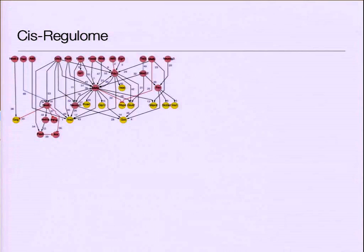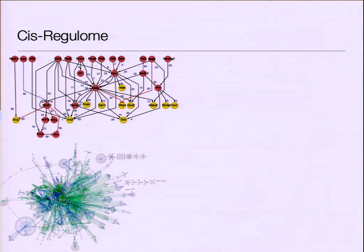The cis-regulome began with what we could enumerate, starting very small about a decade ago. Since then, new high-throughput technologies have allowed us to enumerate thousands of genes interacting within the cell. So the cis-regulome is a very complicated network with a lot of interacting parts.